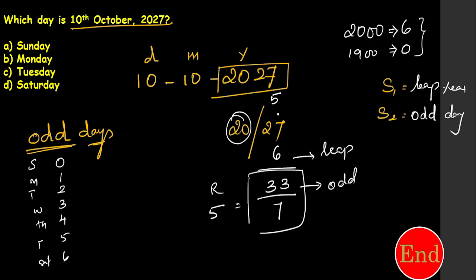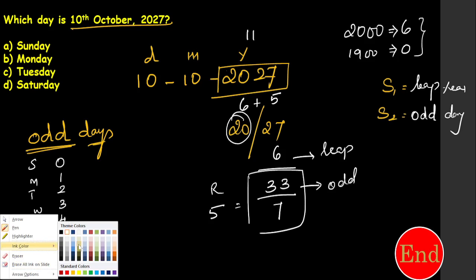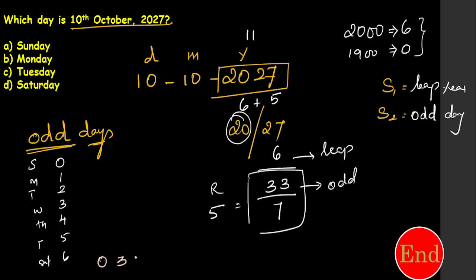Next, go for the month. Each month has a separate code for the 12 months: 0, 3, 3, 6, 1, 4, 6, 2, 5, 0, 3, 5. For the 10th month (October) the code is 0. Then for the day 10: divide 10 by 7 and the remainder is 3. So total: 11 plus 0 plus 3 equals 14.